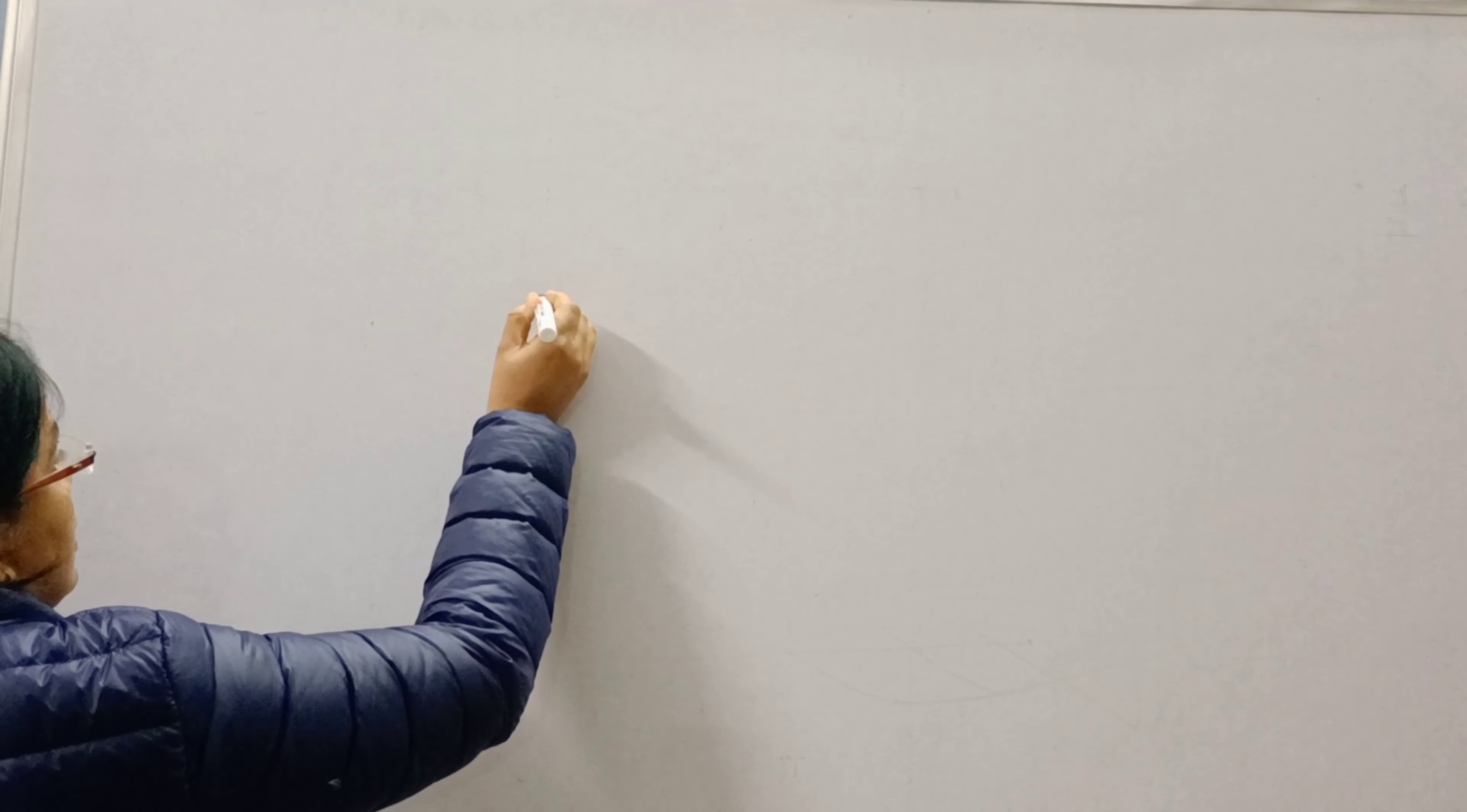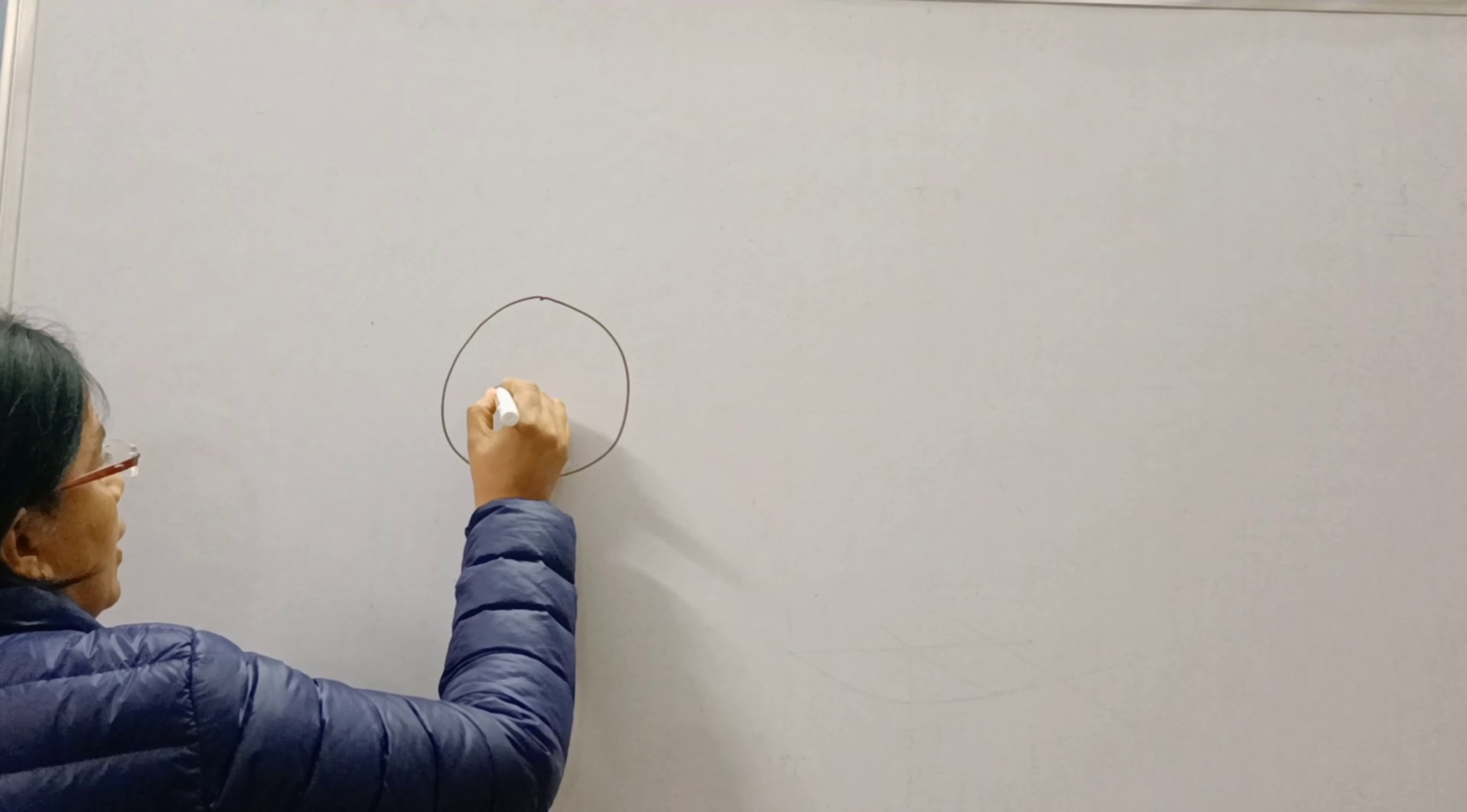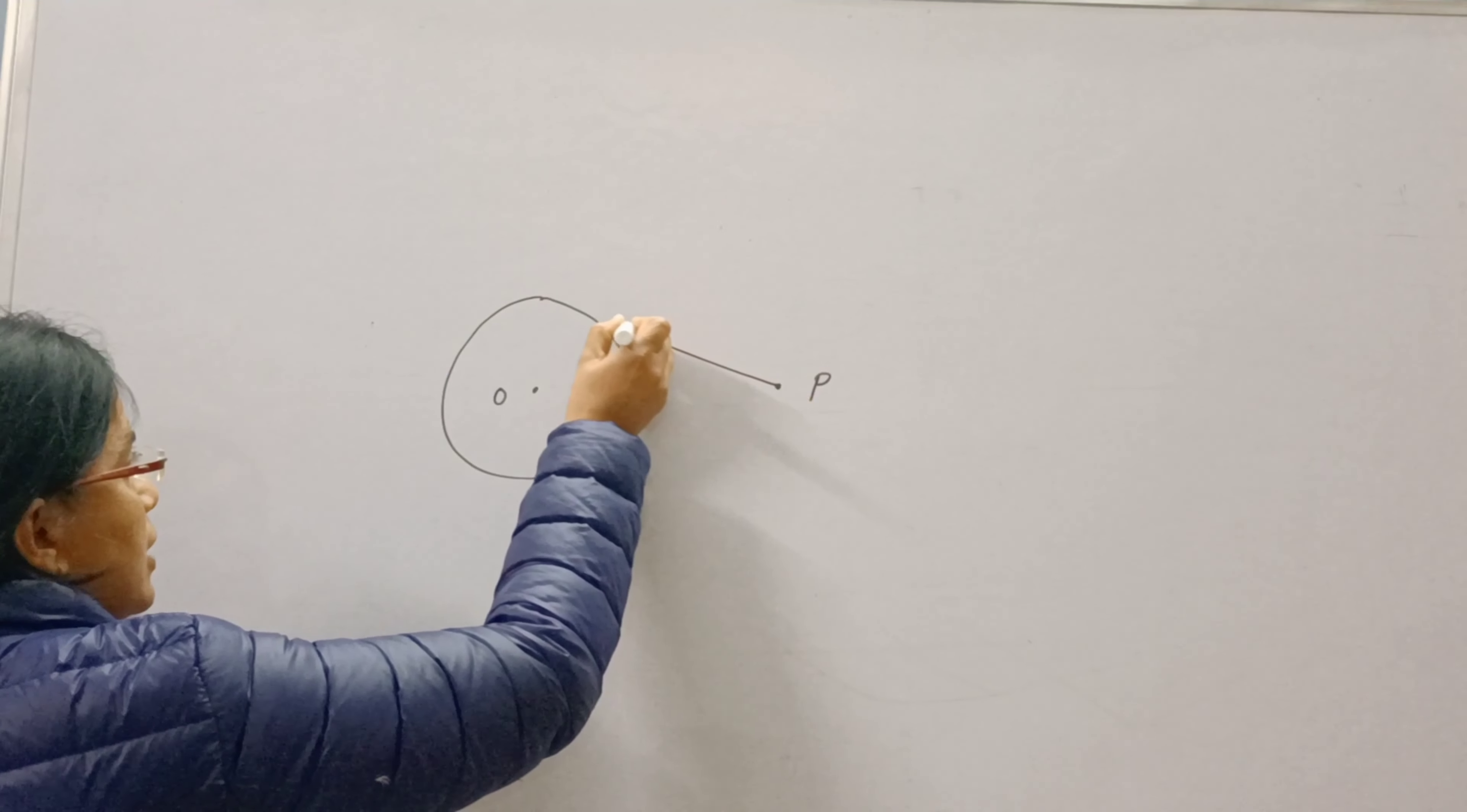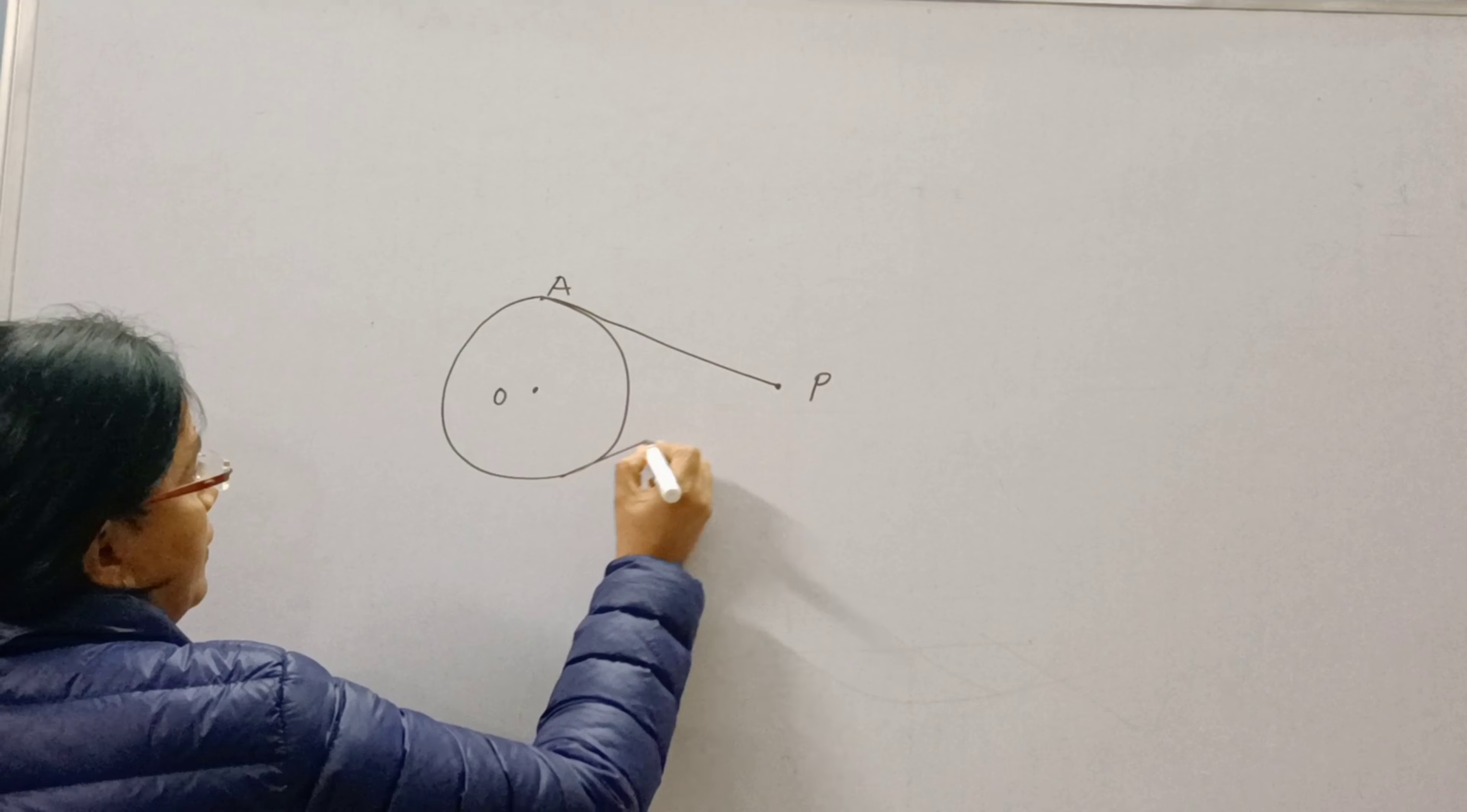So, a circle is given with center O and P is any external point. And from this external point, two tangents are drawn to the circle, PA and PB.